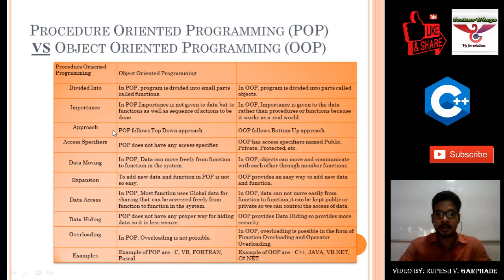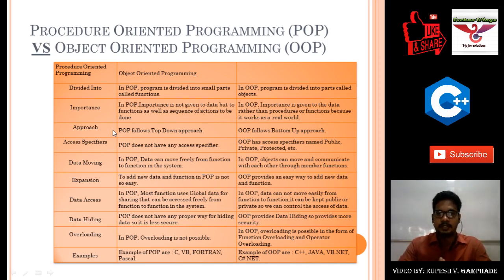Examples of procedure oriented programming languages are C, COBOL, and Pascal. Examples of object oriented programming are C++, Java, VB.NET, and C# .NET. C++ is object oriented programming, while Java is pure object oriented programming — in Java every program must be in the form of class and object, but in C++ you can write programs both as class and object or in the main function.